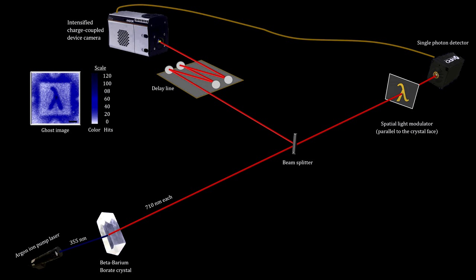To ghost image a photon's polarization, the Glasgow team made some adjustments to this configuration to take advantage of the entangled polarization and the entangled orbital angular momentum created by the beta-barium-borate crystal.